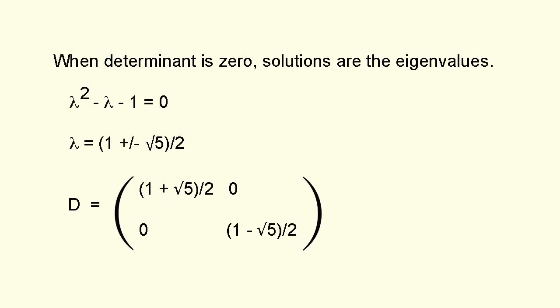When the determinant is 0, the solutions are the eigenvalues. Applying the quadratic formula we obtain lambda equals 1 plus or minus root 5 all over 2 which you'll recognize as the phi 1 and phi 2 that appear in Binet's formula. We can now plug these two values into the main diagonal of our required diagonal matrix D, remembering that the values off the diagonal are both 0. So we have this.